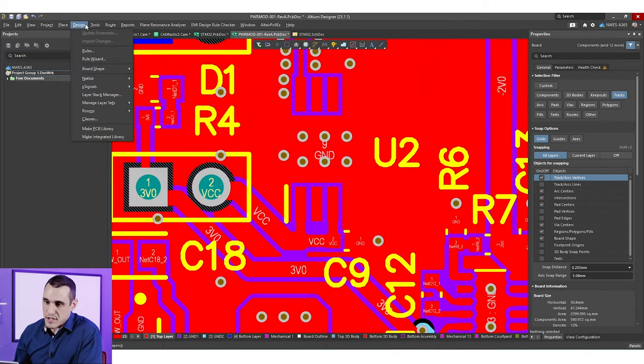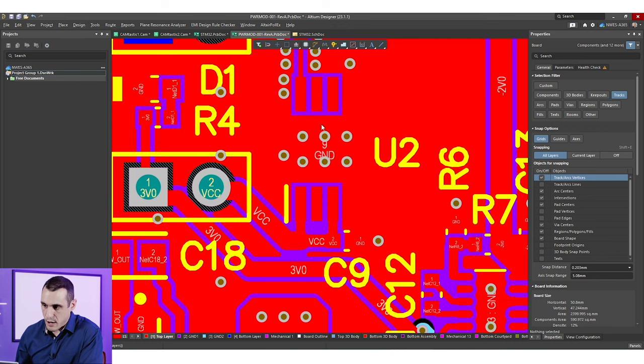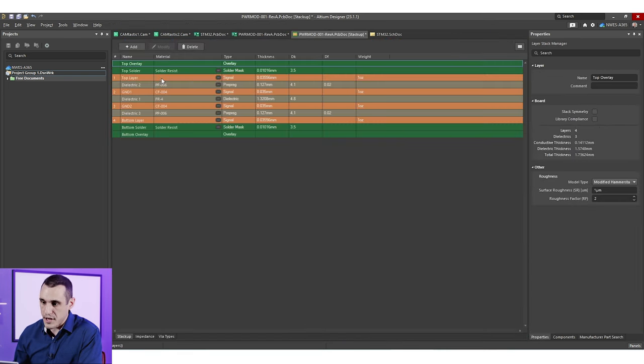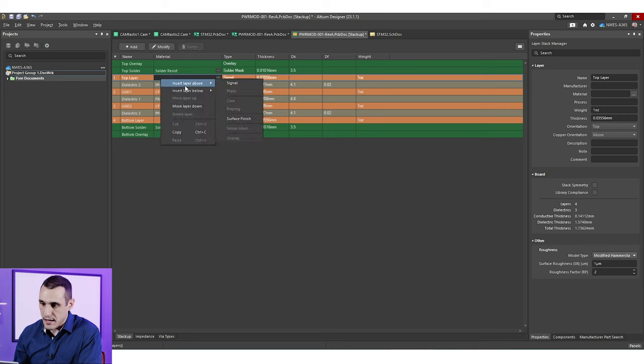Now what about plating? Can we specify plating in our layer stack manager? Well as it turns out we actually can do that. Just go into the layer stack manager and you want to go to the top layer. With the top layer selected you can then right click and hit insert layer above and you'll see there's this option for surface finish. Just select surface finish.